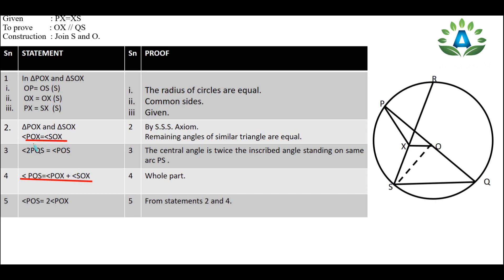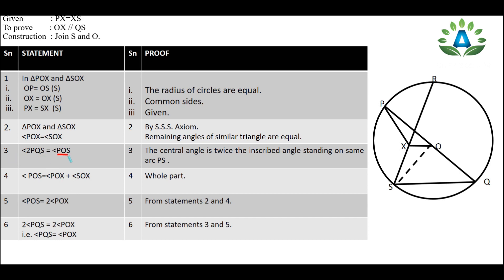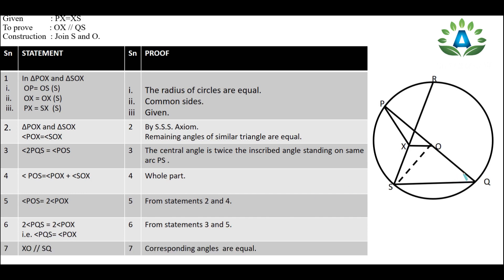Since we already proved POX equals SOX, we substitute SOX with POX: so POS equals POX plus POX, which gives POS equals 2·POX. From statements 3 and 5, angle POS is common, so we get 2·PQS equals 2·POX. Dividing both sides by 2, we get PQS equals POX.